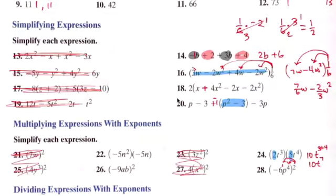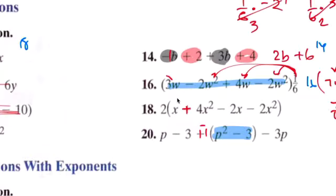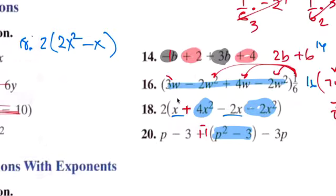Here you add like terms. This is number fourteen, sixteen, number eighteen. I'm going to combine my terms first here. Combine these two together, I got two parentheses 2x squared minus x. Then you can distribute, 4x squared minus 2x.